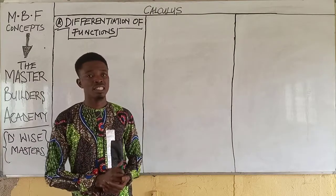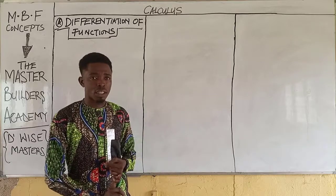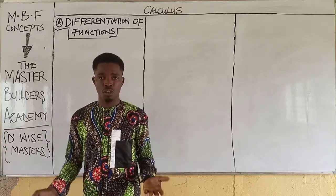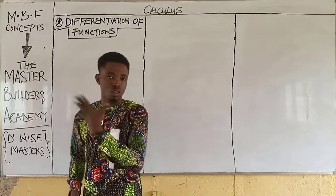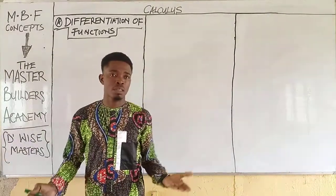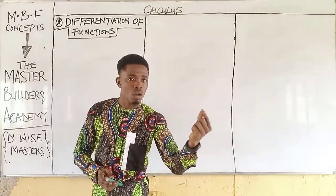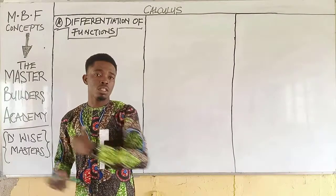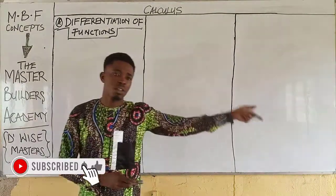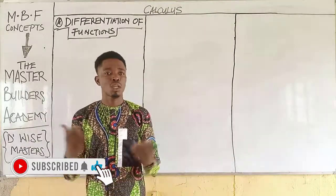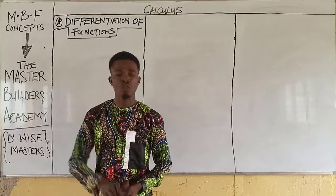This is because in limits, you apply the knowledge of differentiation. So how can you apply the knowledge of differentiation if you have not first known what differentiation is all about? Since limits are dependent on the concept of differentiation, we have to first look at differentiation so that when you get the concept of differentiation, limits will become very easy for you to handle.